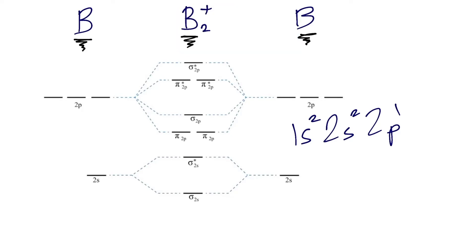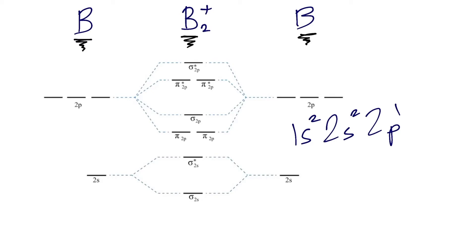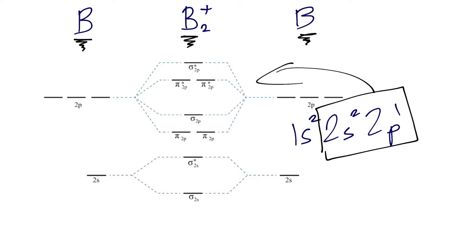From this electron configuration we can see that the highest energy atomic orbitals are associated with the n=2 sublevel or energy level. So we can narrow in on the 2s and the 2p orbitals for our molecular orbital diagram, because these contain the valence electrons which are involved with bonding. We can ignore the 1s orbital and the electrons in it for the purposes of our MO diagram.